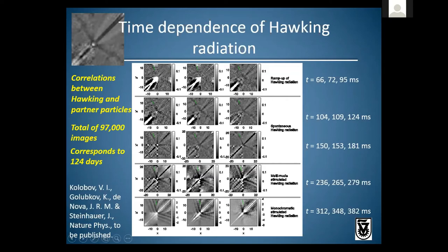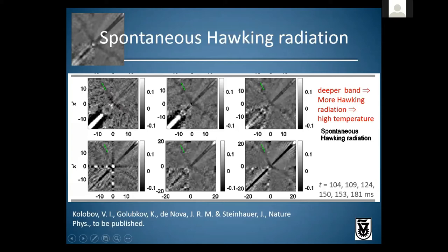Let's zoom in on the six time points in the spontaneous Hawking radiation period. In all of these pictures you can see a band coming out of the middle, and the average of these six shows the band even more clearly. We see this spontaneous Hawking radiation and now want to compare it with theory — specifically, what Hawking temperature is associated with this and does it agree with the prediction from the surface gravity from the slope of the density.